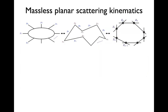Let me talk about kinematics. We have a set of momenta p₁ up to pₙ, and I'm going to be planar, so I give them a cyclic ordering. They come in and do their scattering process, and these momenta satisfy two sets of constraints: first, momentum conservation — the sum over all incoming momenta vanishes — and second, they're on-shell. This is the massless condition for gluons: pᵢ² = 0.